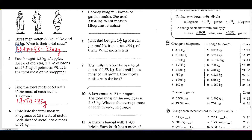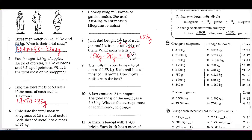John's dad bought one and a half kilograms of nuts. John and his friends ate 395 grams. What mass is left? This is a little tricky — make sure you convert the grams into kilograms or the kilograms into grams. I'll convert the kilograms into grams. One and a half kilograms is 1.5 kilograms. To convert to grams, you multiply by 1,000 — the same concept as converting kilometers to meters — giving 1,500 grams. Take away 395 grams, and you should get 1,105 grams.